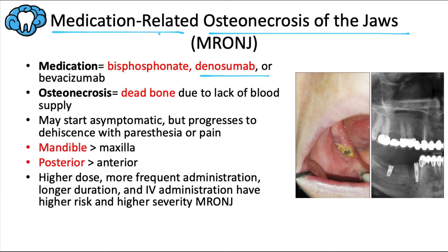Basically, how it works is you combine current or previous treatment with one of these drugs with a bone exposure — like you'd get with an extraction, an implant placement, or periodontal surgery. As a result, the bone loses its overlying blood supply, and then because of the medication, it can't supply its own blood from underneath, so it dries out and dies. It might start out asymptomatic, but eventually progresses to bony dehiscence with paresthesia or severe pain. It usually presents as a painful abscessed tooth that, when extracted, exposes the underlying necrotic bone that does not heal due to a complex interplay of inhibited bone metabolism, local trauma with microfractures, and hypovascularity due to the inhibition of capillary formation — angiogenesis.